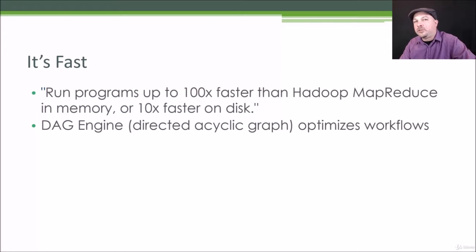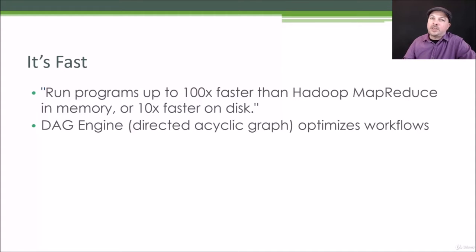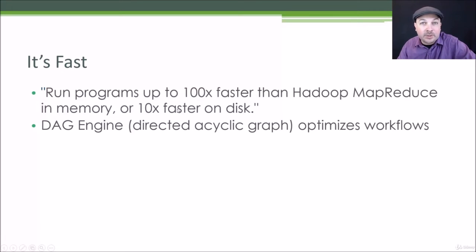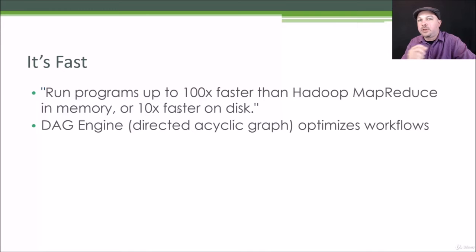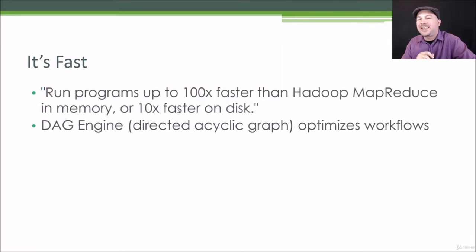What's the big deal about Spark? There are similar technologies like MapReduce that have been around longer. Spark is fast — they claim it's up to 100 times faster than MapReduce when running a job in memory, or 10 times faster on disk. Your mileage may vary. Spark also makes a lot of common operations easier. MapReduce forces you to break things down into mappers and reducers, whereas Spark is a little bit higher level. Part of that leads to another reason why Spark is so fast: it has a DAG engine — a directed acyclic graph.